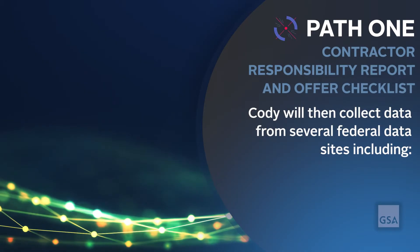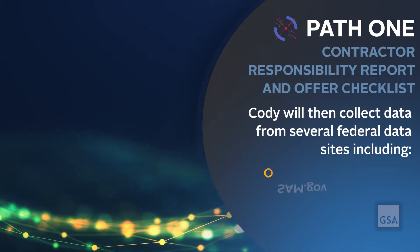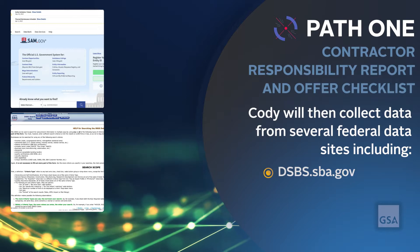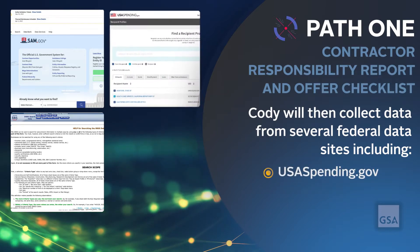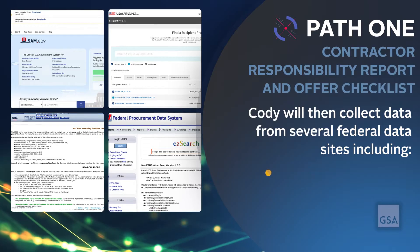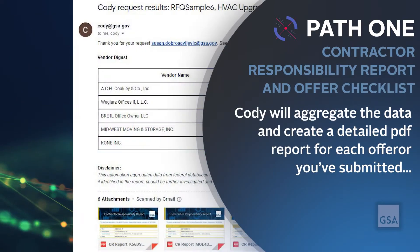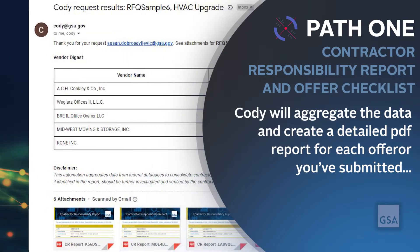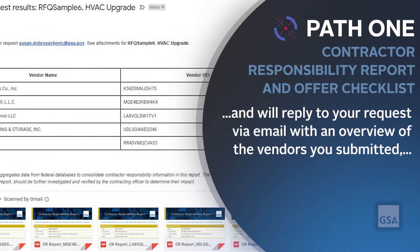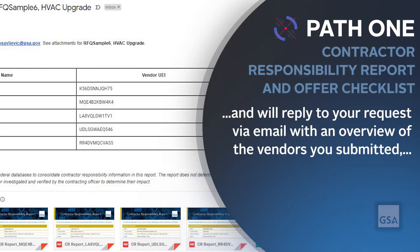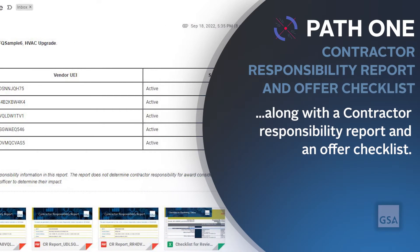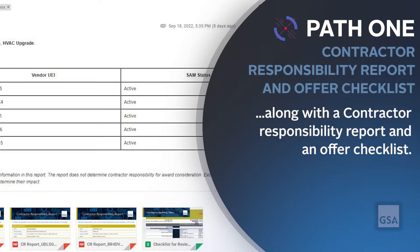Kodi will then collect data from several federal data sites, including SAM.gov, DSBS.SBA.gov, usaspending.gov, and fpds.gov. Kodi will aggregate the data and create a detailed PDF report for each offeror you have submitted, and will reply to your request via email with an overview of the vendors you submitted along with a contractor responsibility report and an offer checklist.